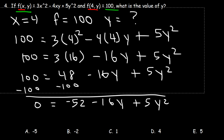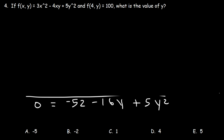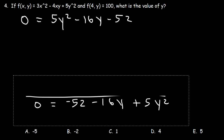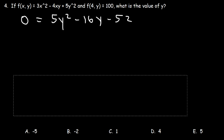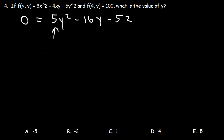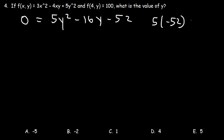Let's rewrite it in standard form: 5y squared minus 16y minus 52. Let's see if we can factor this expression. To factor a trinomial where the leading coefficient is not 1 — in this case it's 5 — we need to multiply the first number by the last number. 5 times negative 52: 5 times 50 is 250, and 5 times 2 is 10, so that's negative 260. What two numbers multiply to negative 260 but add up to negative 16?